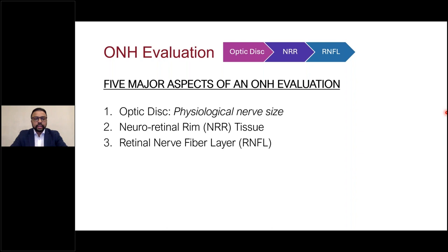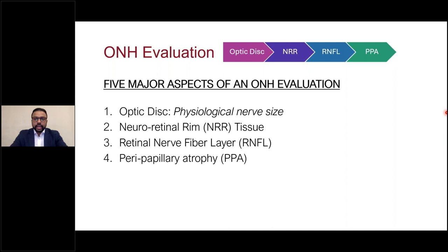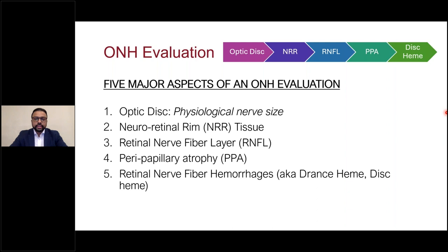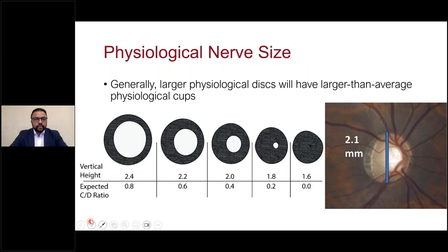Wedge defects look impressive because there's often an associated visual field defect, but the most common type of RNFL loss in glaucoma is actually diffuse. We also want to evaluate the peripapillary area for atrophy — in glaucoma patients, there's often an inverse relationship between loss of neuroretinal rim and an increase in beta zone peripapillary atrophy. And we want to look for the presence of disc hemorrhages.